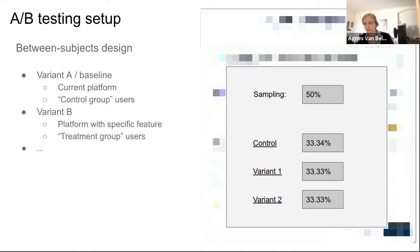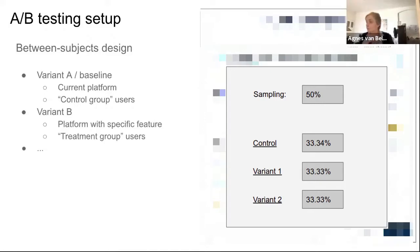You can of course have more than two variants. In the example shown, the experiment has three variants and each of them gets 33% of the users allocated to it.